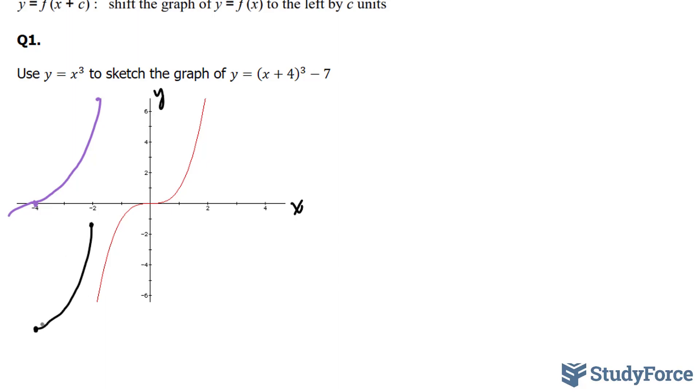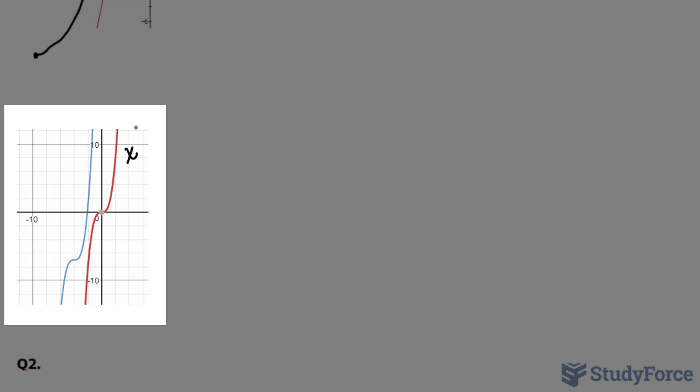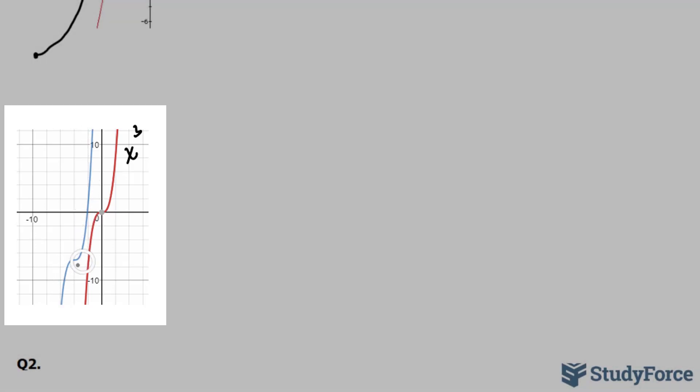Now a final version of this graph would look like this. Notice that this red curve represents x to the power of 3, and that every point along this red curve has been shifted 4 units to the left, and every point on this curve has been shifted downwards by minus 7, giving you the final curve.